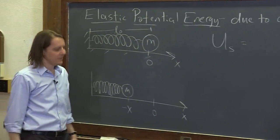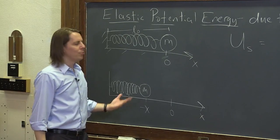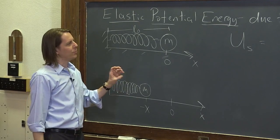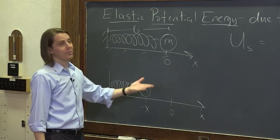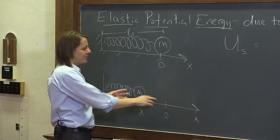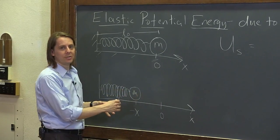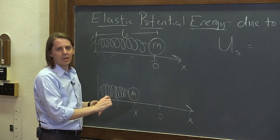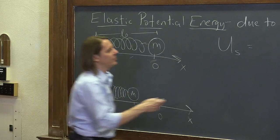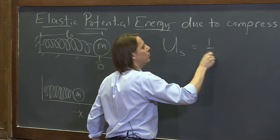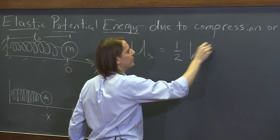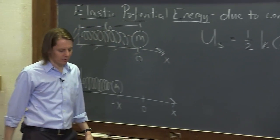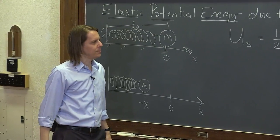The formula is a little more complicated than gravitational potential energy because gravitational force is always constant—just the force times the distance. Here the force actually changes as you push because we know from Hooke's law F equals kx. The farther you push, the bigger the force. That makes the expression a little more complicated, but it's just one-half k times the spring constant times however much you stretched it squared: one-half kx² is the spring potential energy.